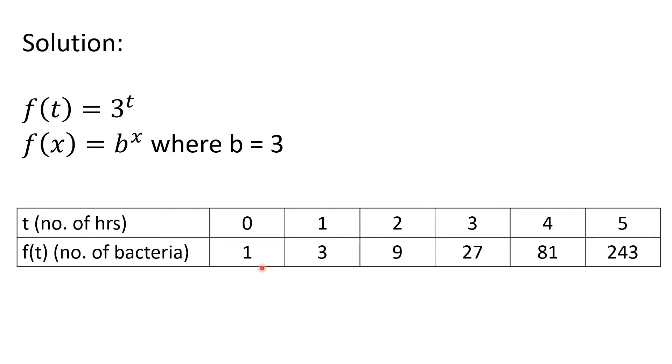For the first pair, the difference is 2 only. Notice that in the second pair, 9 minus 3, it becomes 6. For the third pair, it is 18. So the difference continuously increases. The Y value increases rapidly. So example 1 is an example of an exponential function.